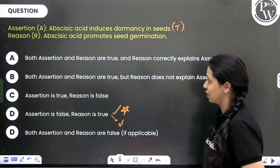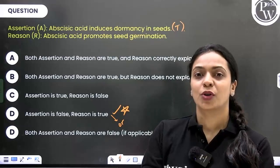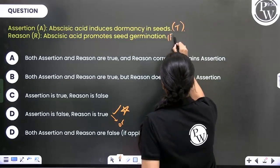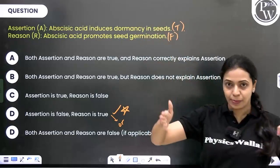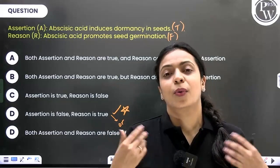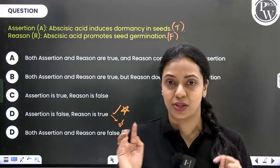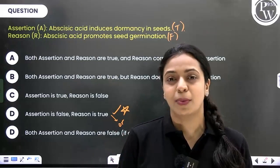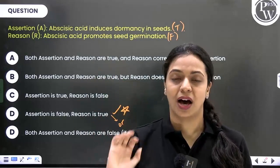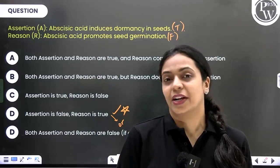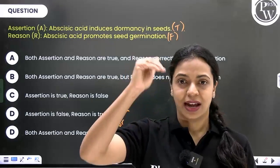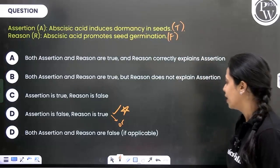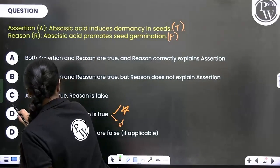The reason statement says: abscisic acid promotes seed germination. Abscisic acid cannot both induce seed dormancy and promote seed germination at the same time — they are contradicting each other. So abscisic acid does not promote seed germination; this is false. Because I read both statements independently as standalone statements, I got clarity. If you try to instantly connect the two, you will see 'abscisic acid' in both statements and immediately think they are related, then right away mark option A or B. But after reading them independently, you know assertion is true and reason is false, so you can mark option C as the correct answer.